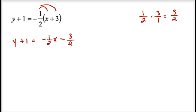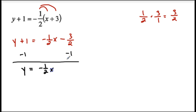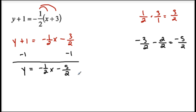Almost there for slope intercept form. Subtract 1 from both sides — solving for y. So I have y equals negative 1 half x, and negative 3 halves minus 1 is negative 3 over 2 minus 2 over 2, which gives me negative 5 over 2. So y equals negative 1 half x minus 5 over 2 is my slope intercept form. We're allowed to have fractions in this form.